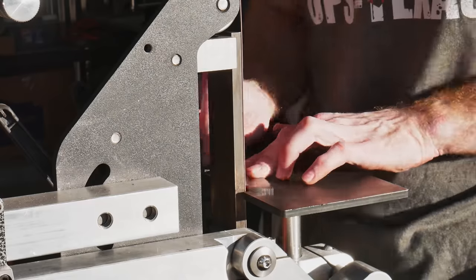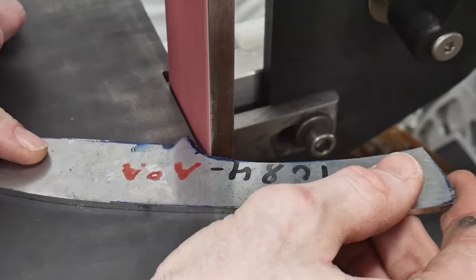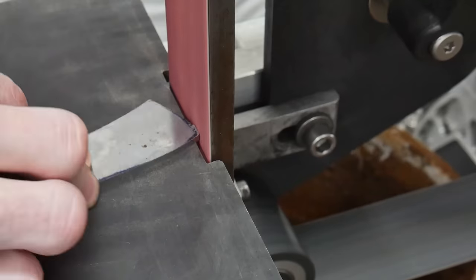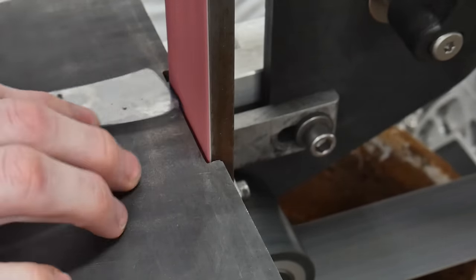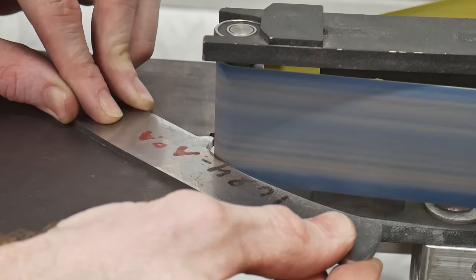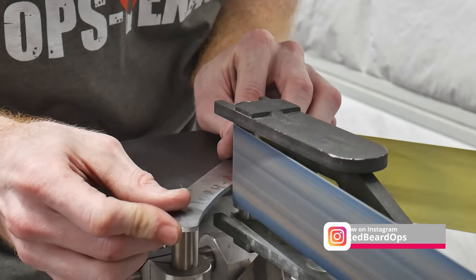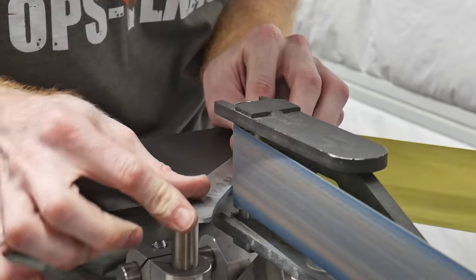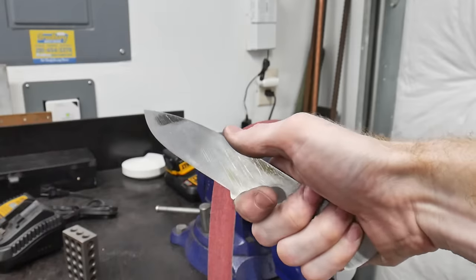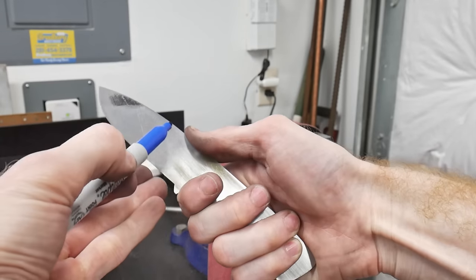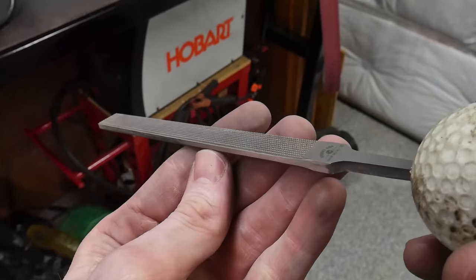I start off the profiling on the grinder with a semi-worn 60 grit ceramic belt to conserve the abrasives on my new belts. After I get it pretty close to my scribe lines, I switch over to a 220 grit belt. I like getting the whole spine squared up to the flats of the knife on my work rest and up to a 220 grit finish before moving on.